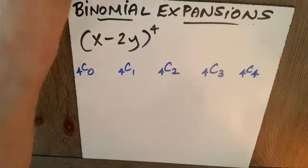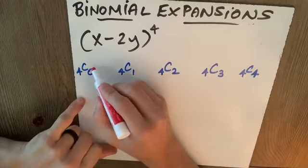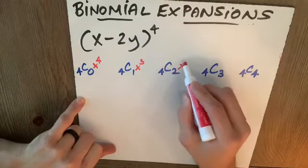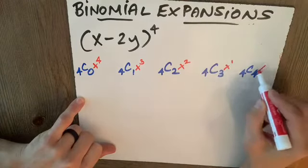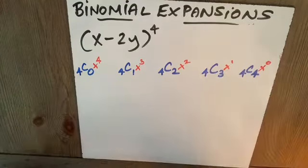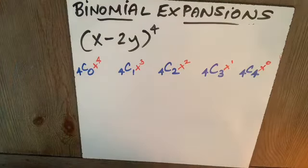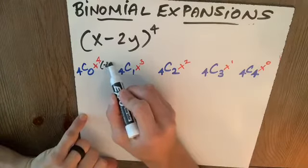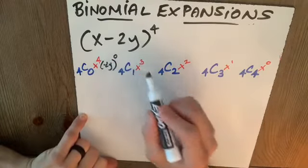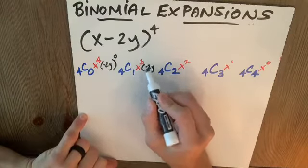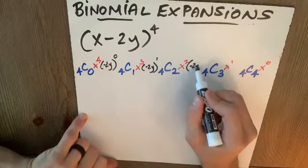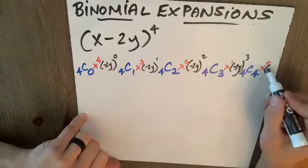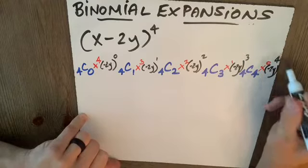Now, I'll take my first term and I'll go in descending order: x to the fourth, x to the third, x squared, x to the first, x to the zero. Now comes the tricky part where I have to do my second term, including its sign: negative 2y to the zero, negative 2y to the one, negative 2y squared, negative 2y to the third power, and negative 2y to the fourth power.